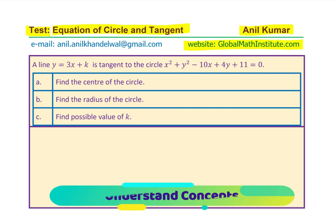In case you want to learn from me, feel free to send an email at the address given. We can discuss a plan. Now, the equation given to us — x² + y² − 10x + 4y + 11 = 0 — is the equation of circle in standard form.